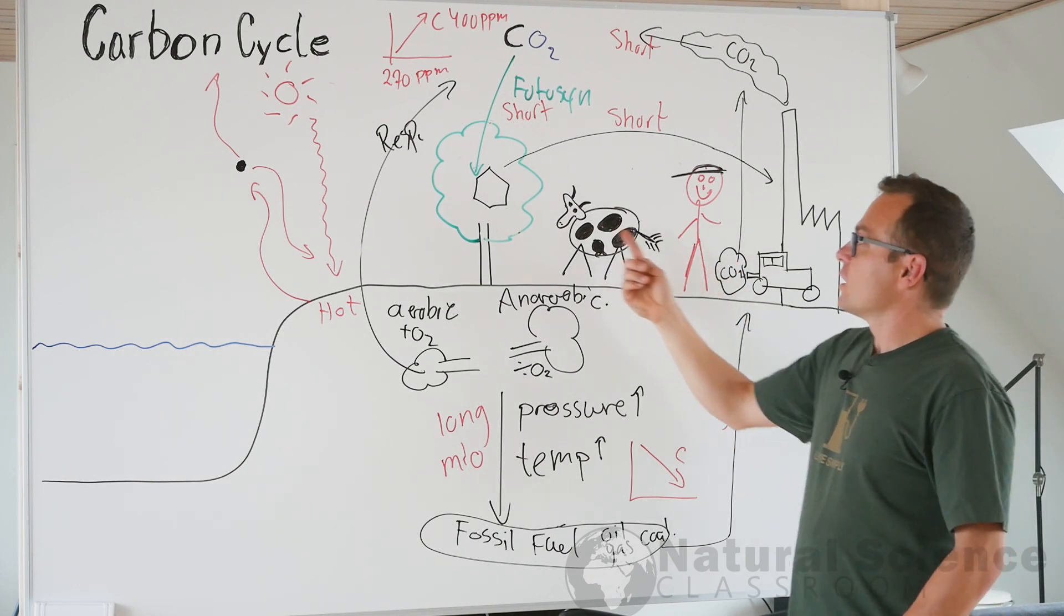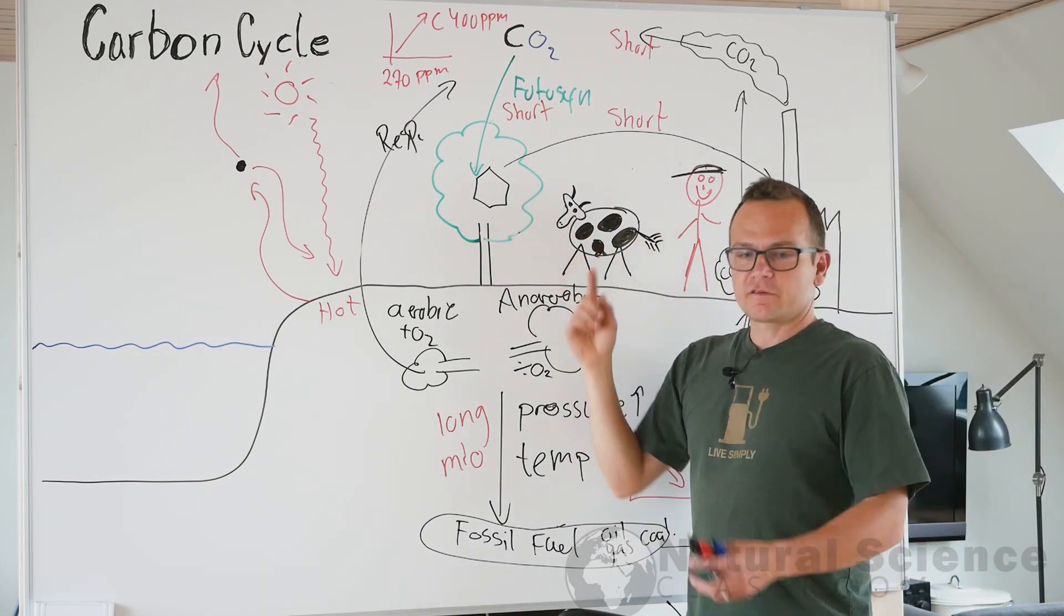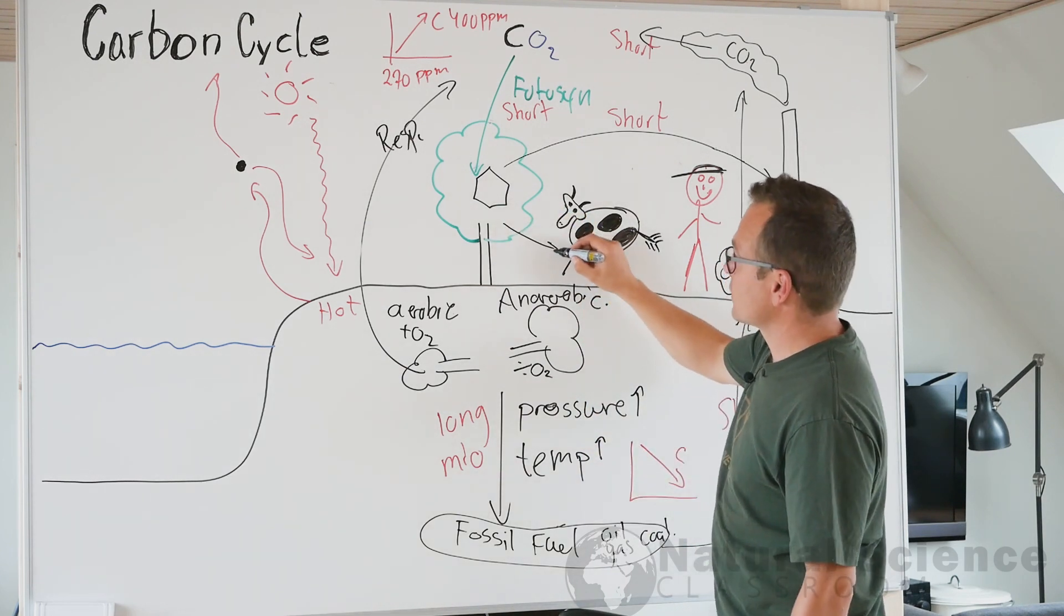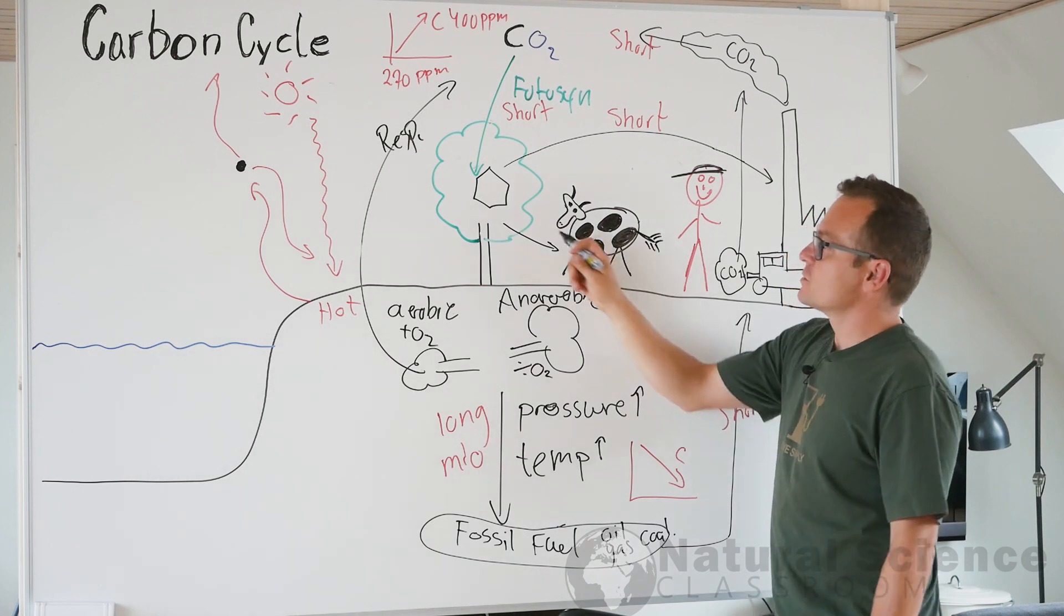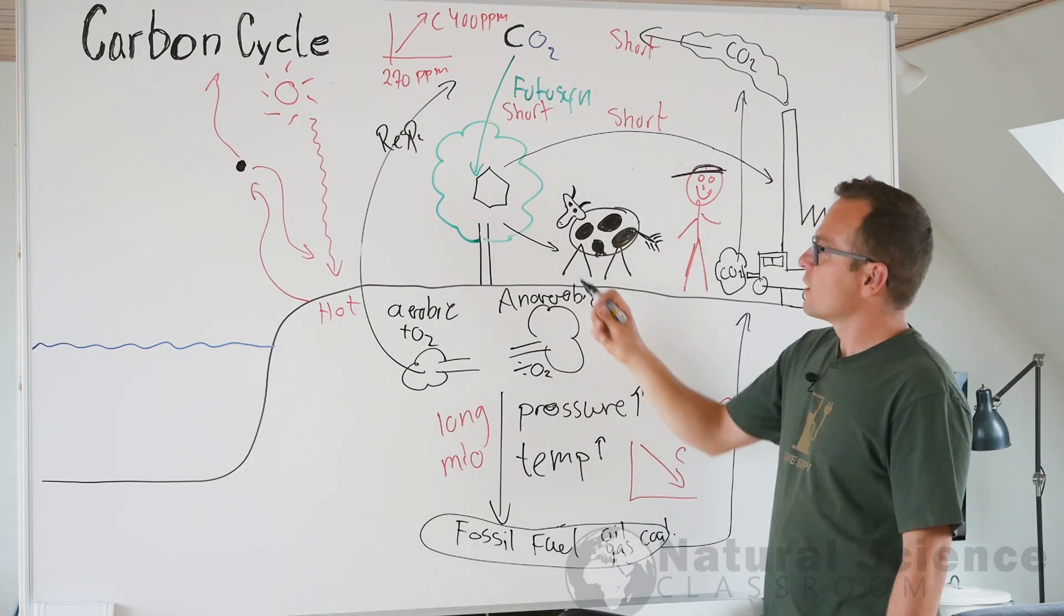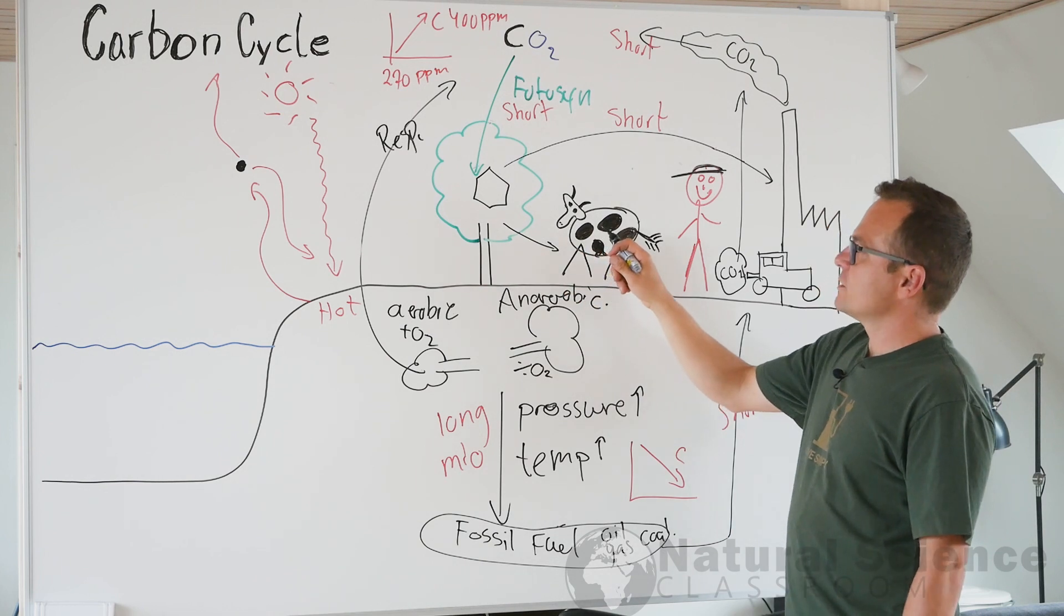Because carbon also travels through the food chain. So in order to make food for the population, the global population, a lot of people is eating a lot of meat, so we have to feed the livestock, and here the livestock is a cow. So you give the cows some vegetation, grass and corn, soybeans, and the cow will then digest it.